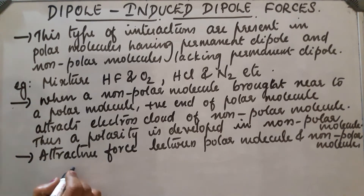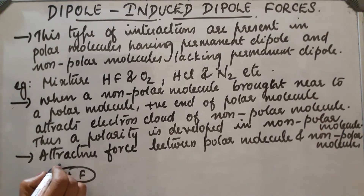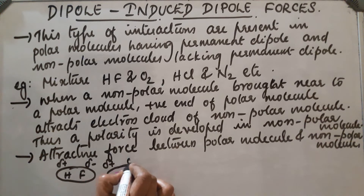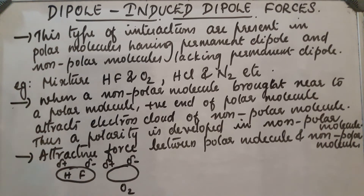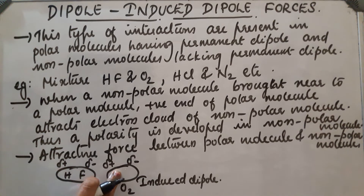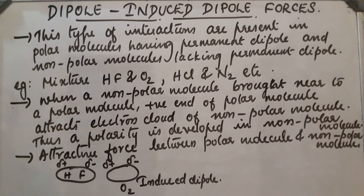For example, if we take HF — it has a permanent dipole with a positive charge and a negative charge. Then O2 gets an induced dipole; an induced dipole is developed in O2. What happens is that the electron cloud gets distorted and the positive end of O2 attracts the negative end of the polar molecule, developing a dipole-induced dipole interaction.